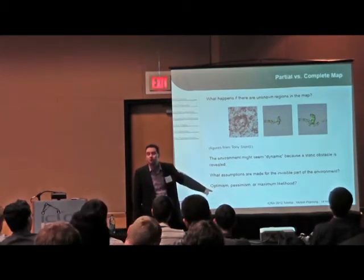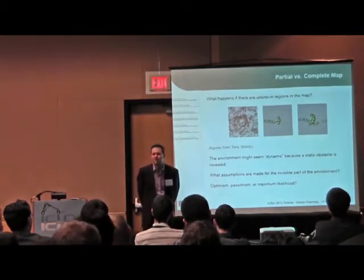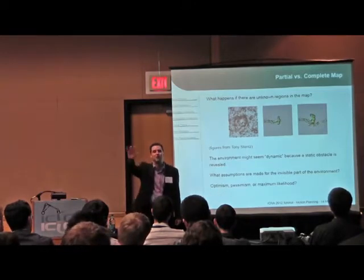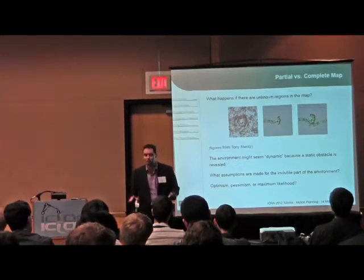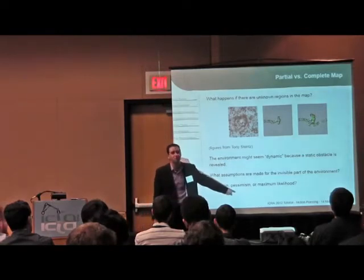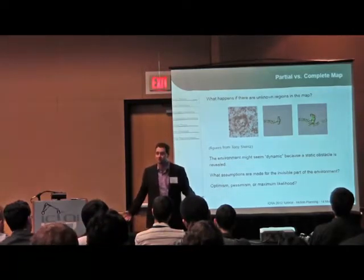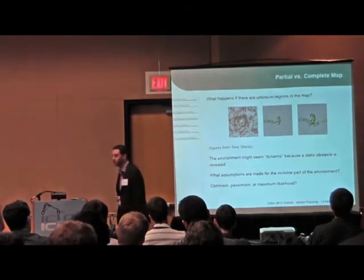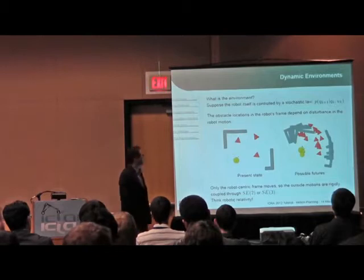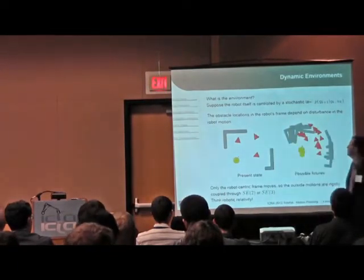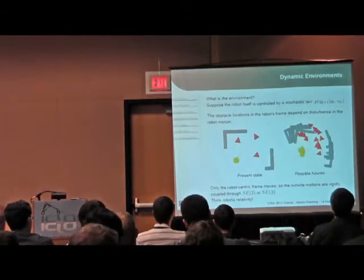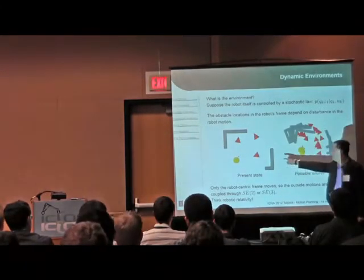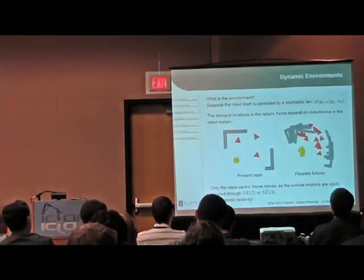There's also the question of what to assume about parts you can't see. Extreme pessimism will likely prevent your robot from ever moving. People at the Field Robotics Center found that planning algorithms using opportunism — assuming things get better in unseen areas — work very well, with fallback strategies for when that fails. If you like probabilities, you might reason about maximum likelihood outcomes in unseen areas.